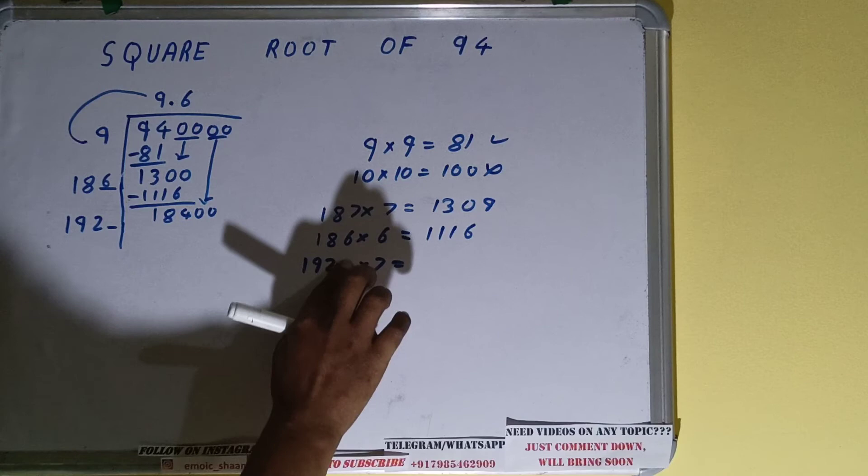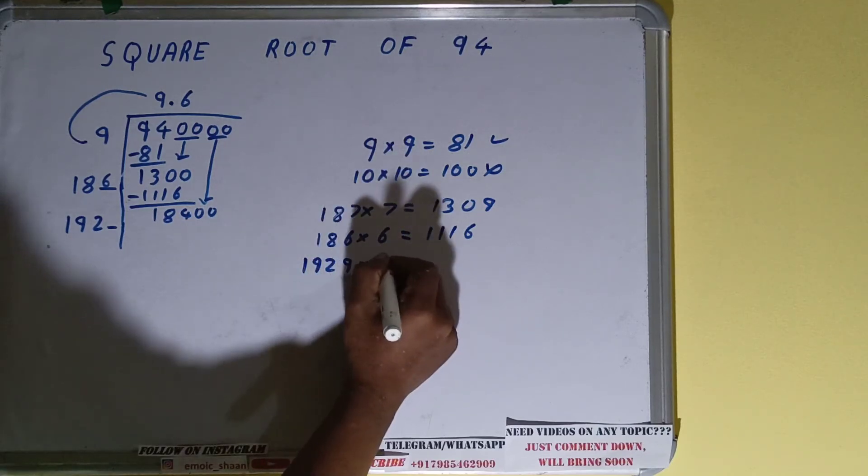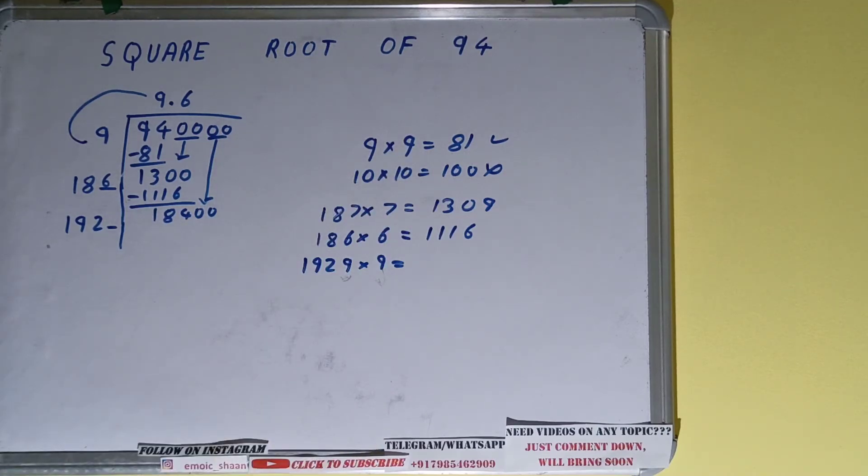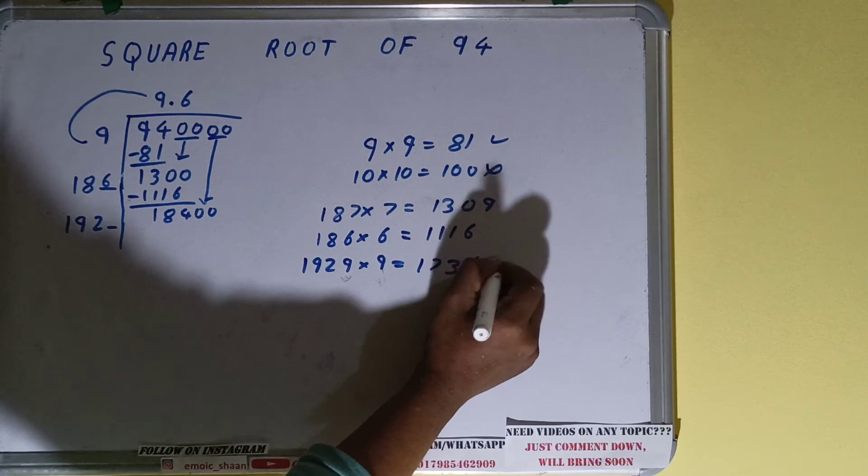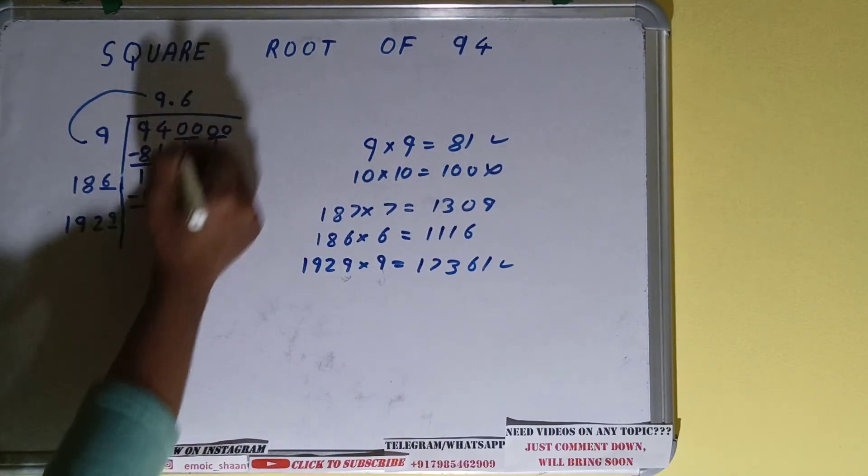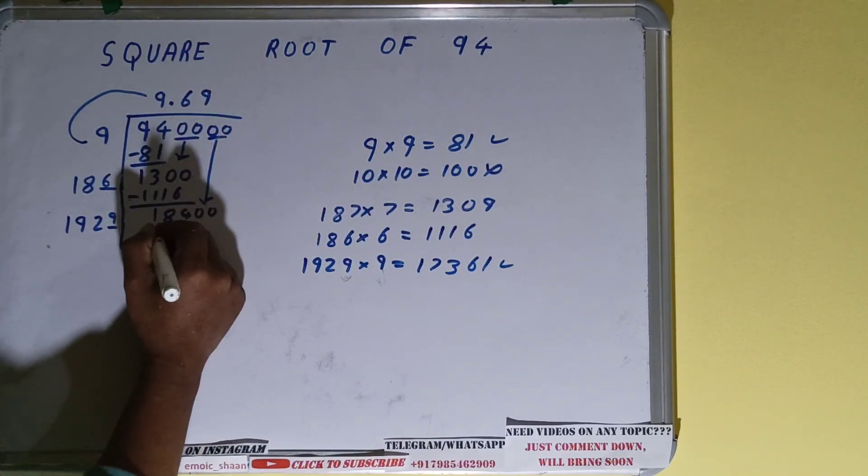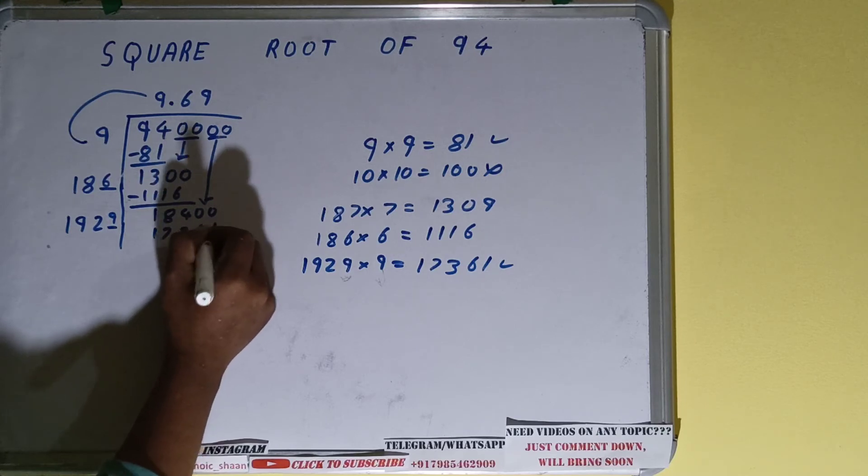Sorry, 1929 into 9 we can try because 19 nine times is 171, right? So it will be 17,361, that is all right to take. So 9 here and 9 here, 17,361.